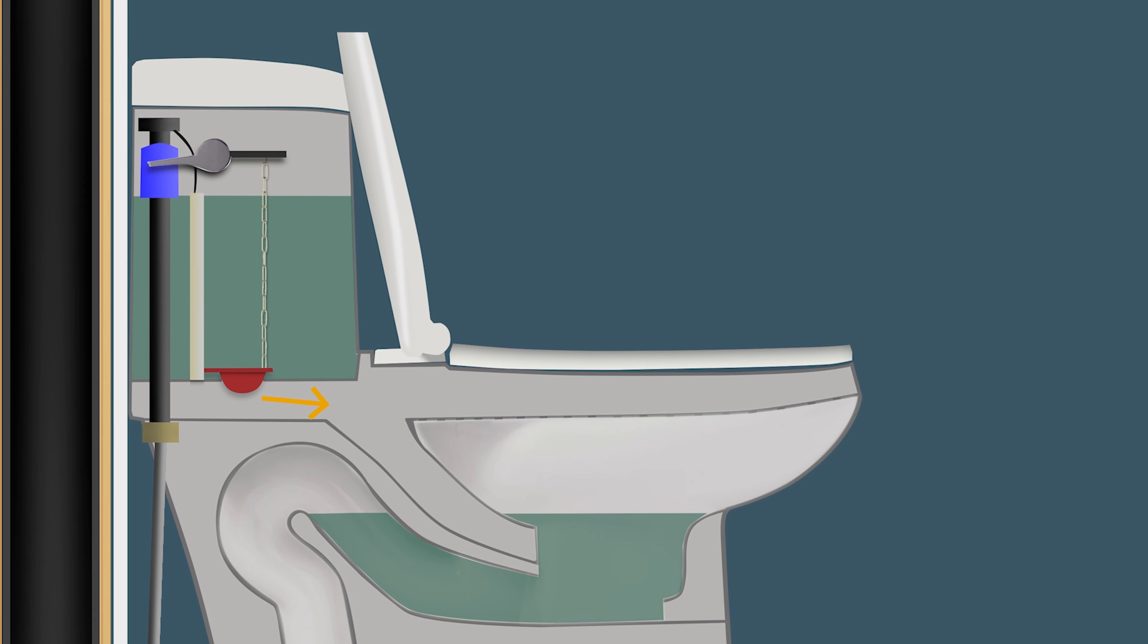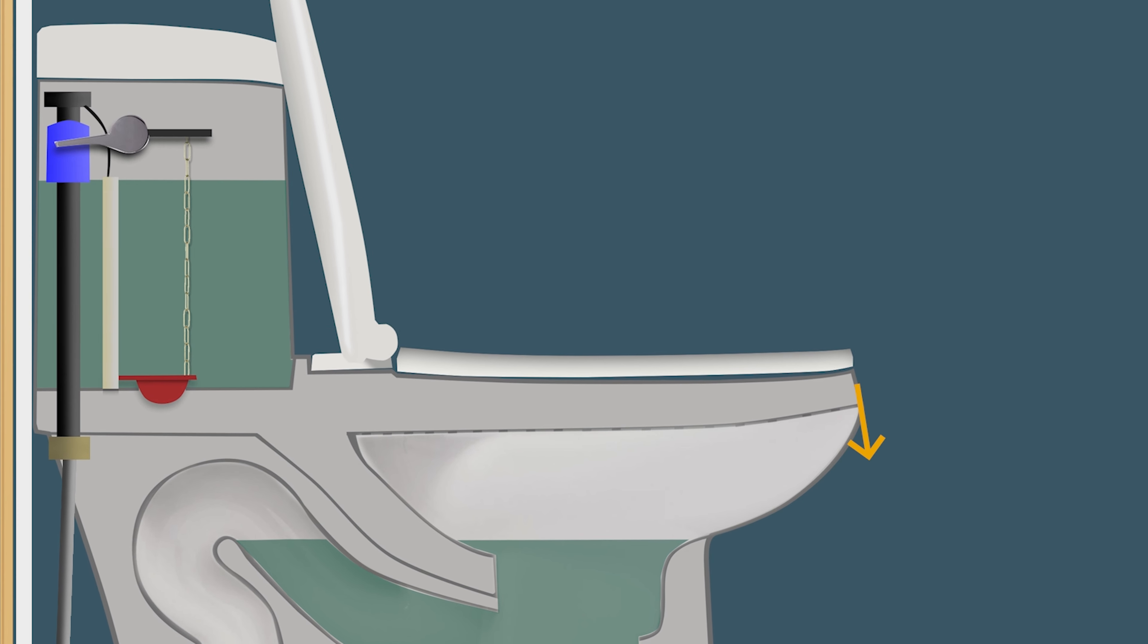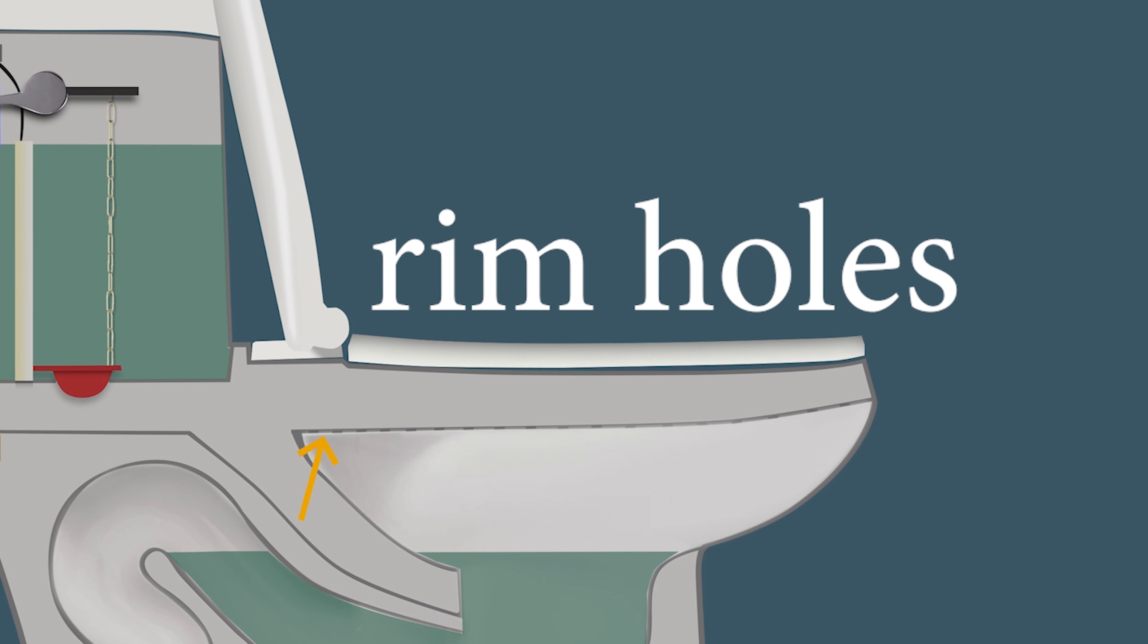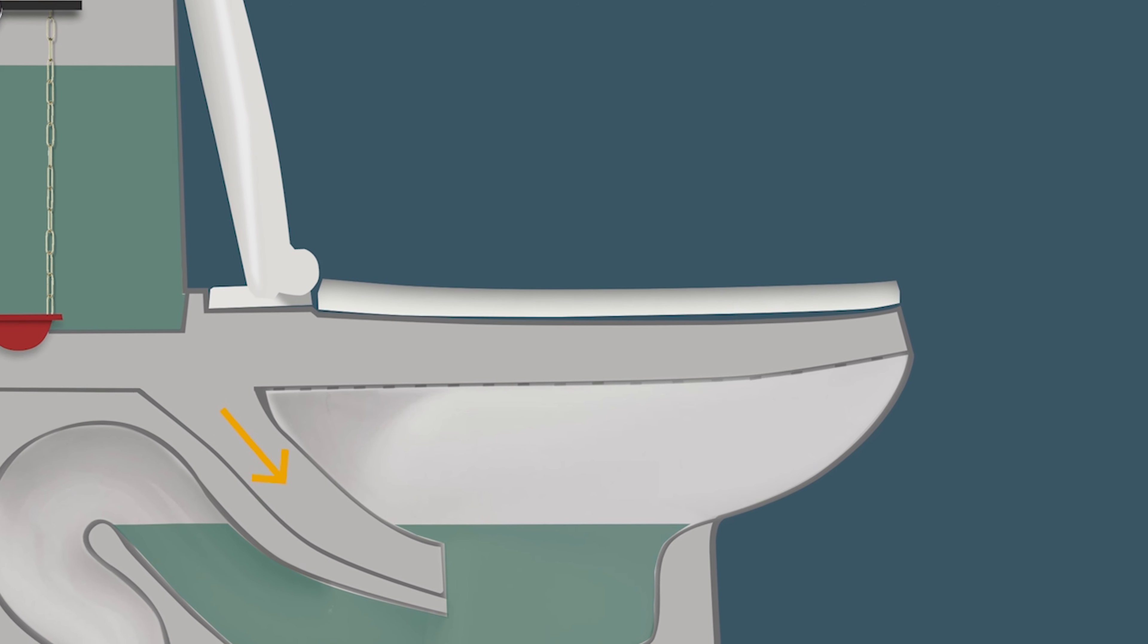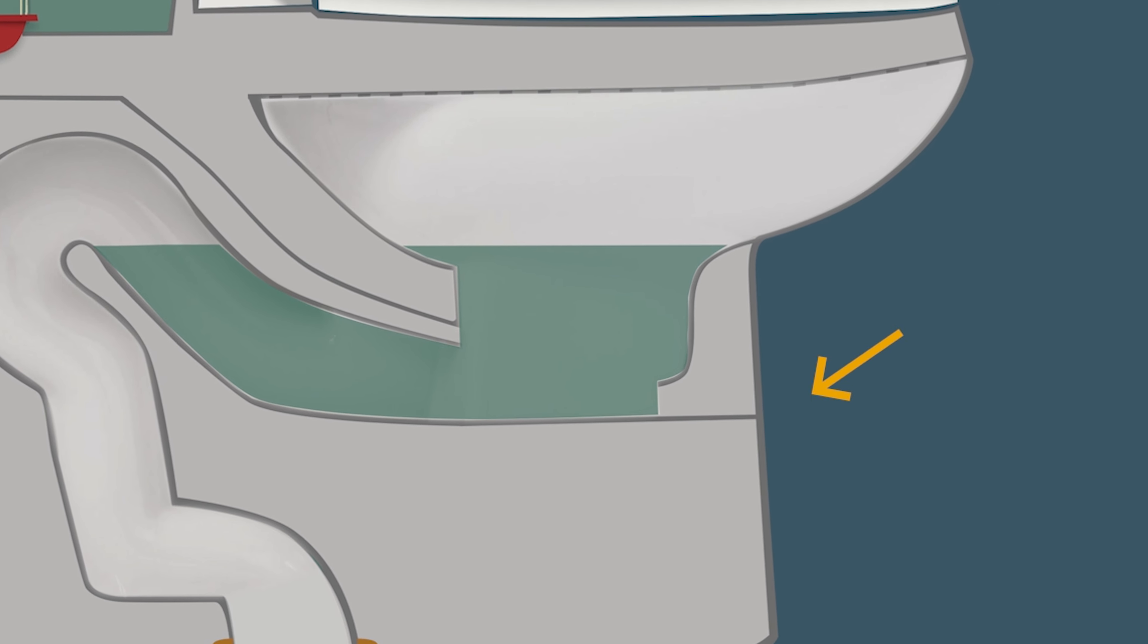Once the flapper is lifted, the water from the tank rushes through a passage that separates in two. One to clean the bowl through these rim holes and one to force the wastewater down the drain which is called a siphon jet.